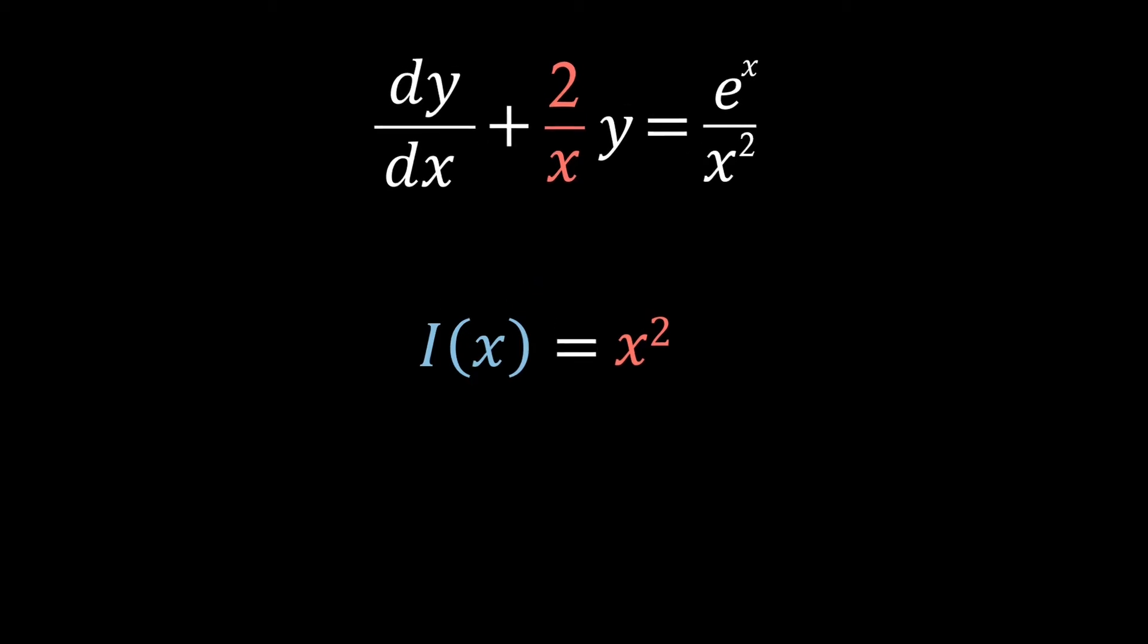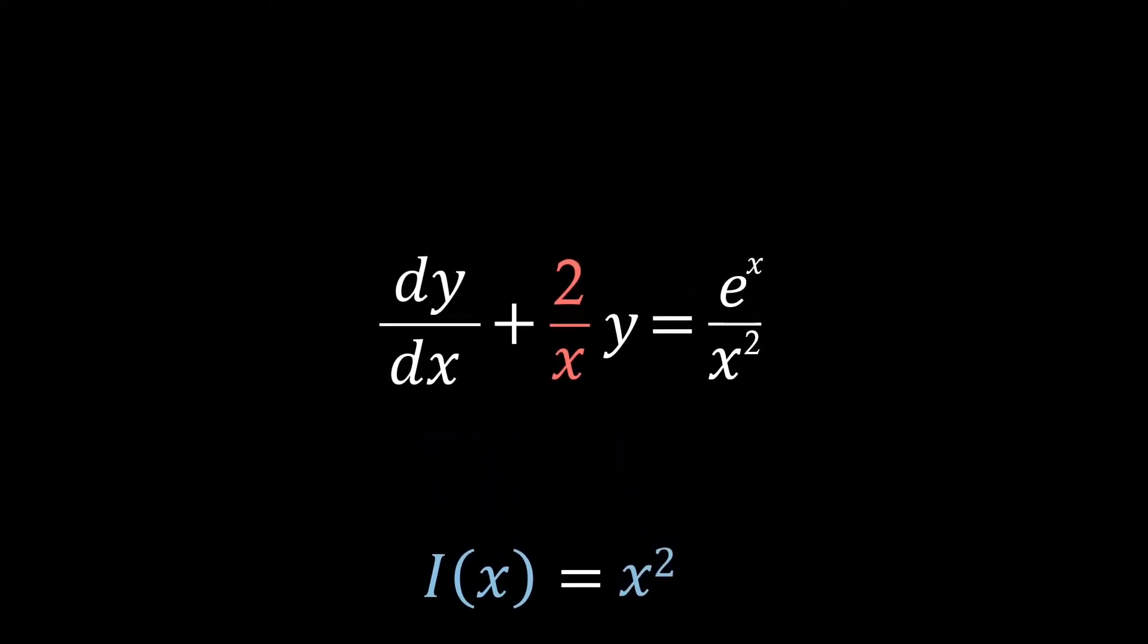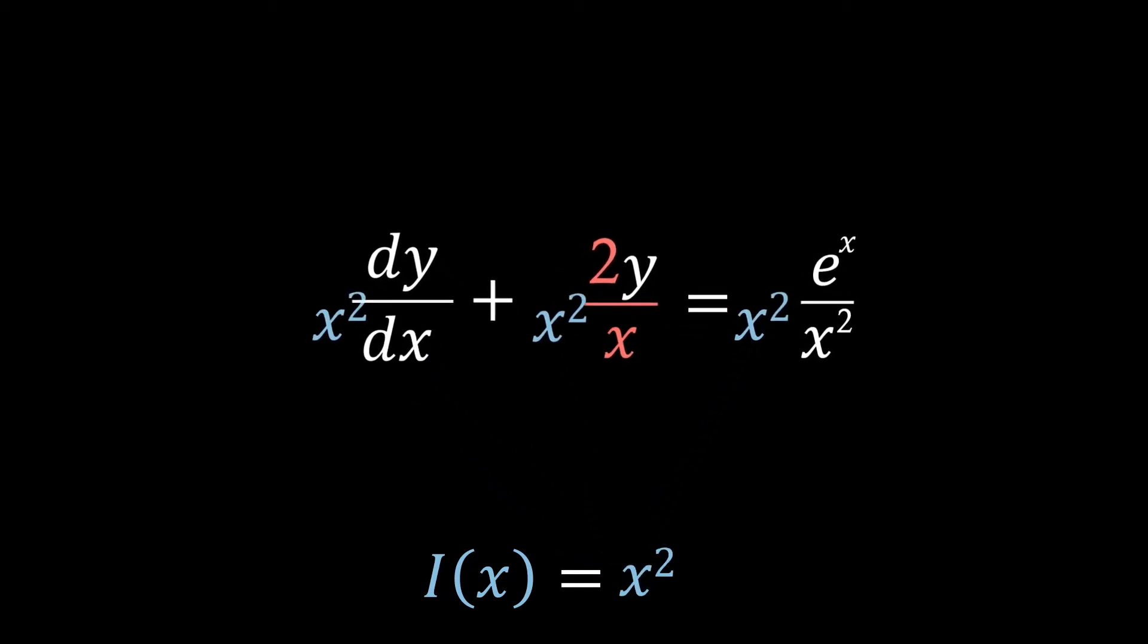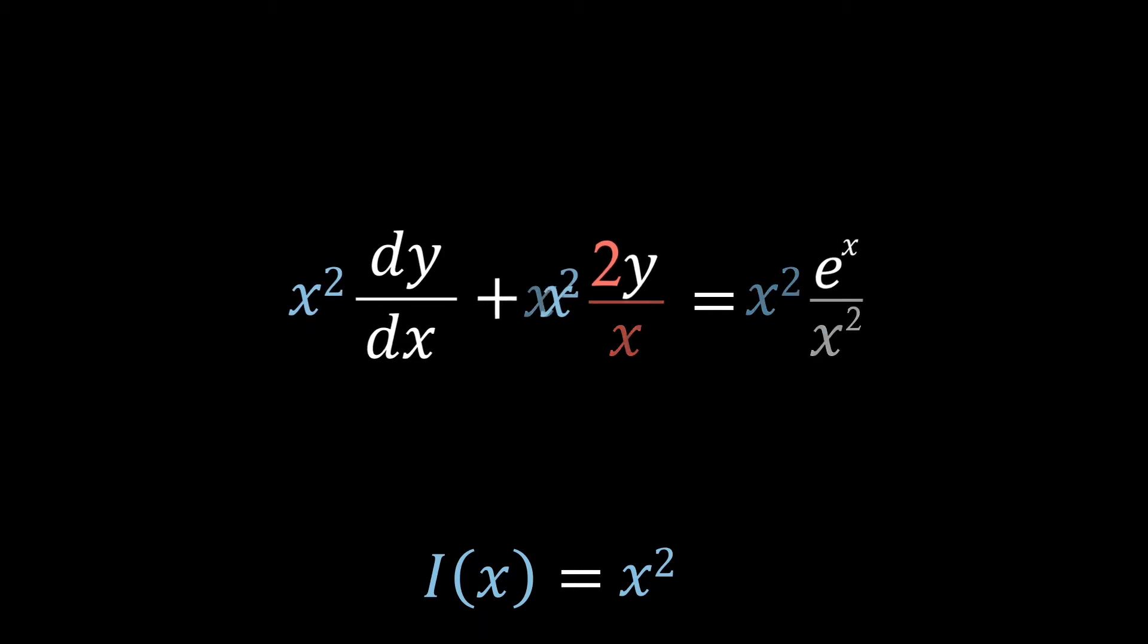Now just as we did before, all we need to do now is multiply our whole equation by x squared. Hence just giving us this expression, where we can see that we can start to cancel down some of our terms, ultimately leaving us with x squared times dy over dx plus 2yx equals e to the x.